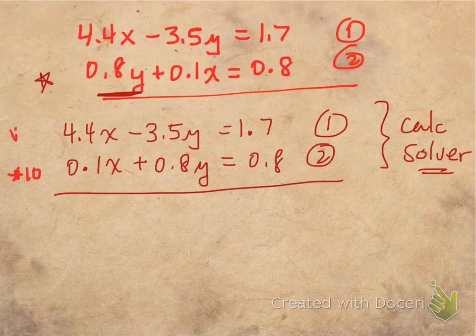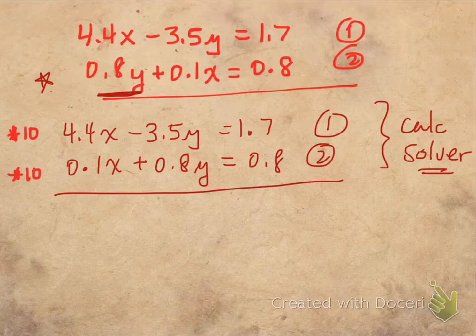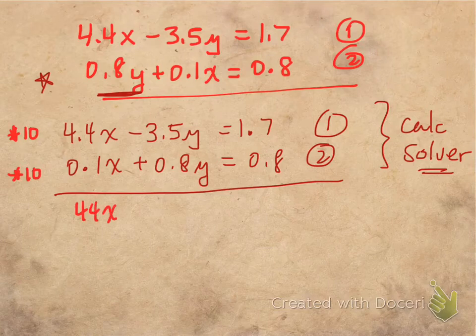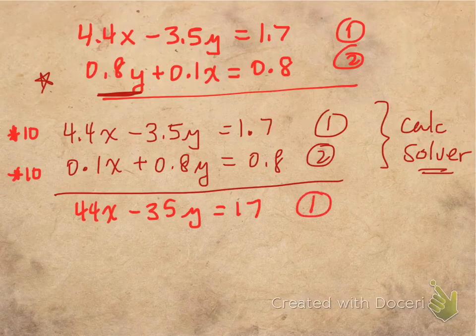And I might even do the same thing for equation number 1 as well. Multiply everything through by 10. And so what I will end up with is 44x minus 35y is equal to 17. Now that's actually the same equation. We'll call it equation 1.